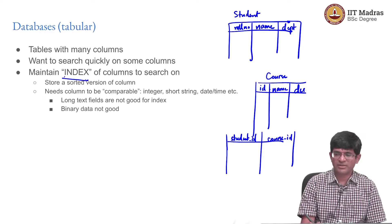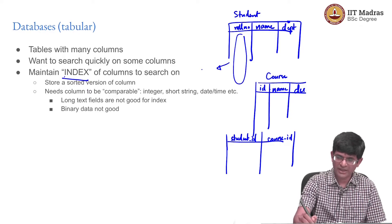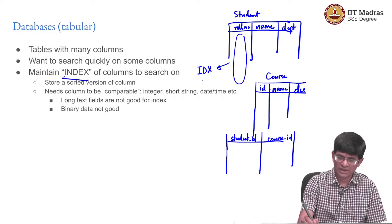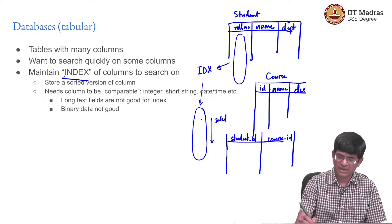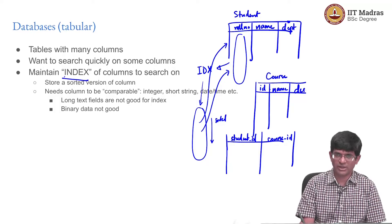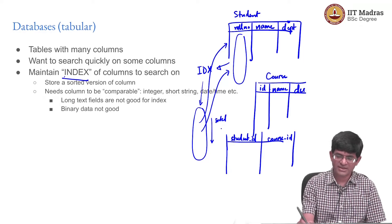An index is actually pretty much just a copy of the data present in one of the columns of a table, but now in sorted order. You basically take all the roll numbers and create an index out of them — another copy, but now sorted, and also with the appropriate links into the correct row in the original table. If I have an index on roll number and want to search for a given roll number, I just search in this sorted list — I can do that in O(log n) time.